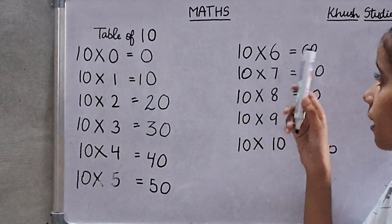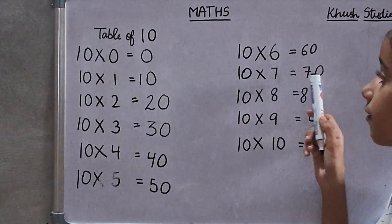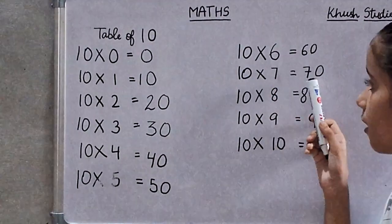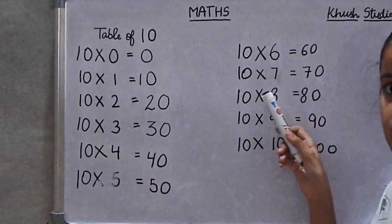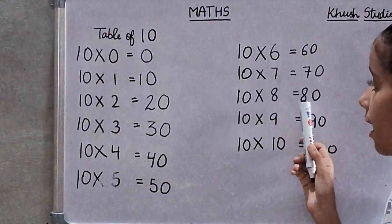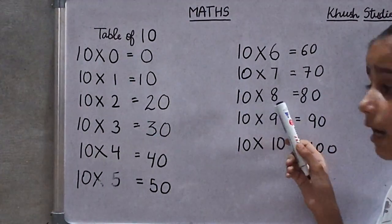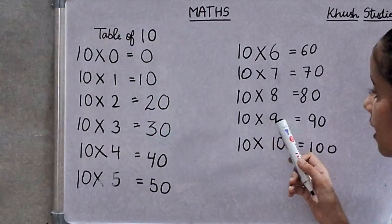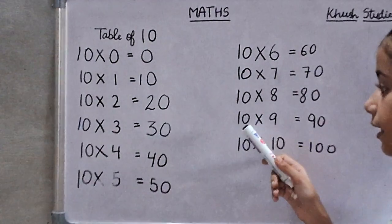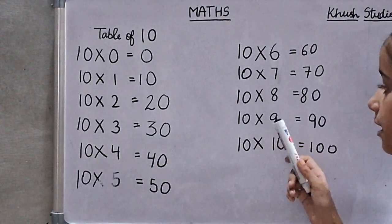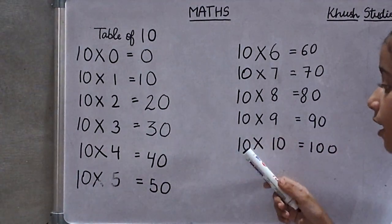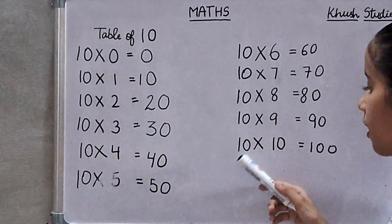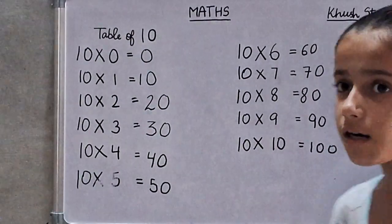Ten sixes are sixty. Ten sevens are seventy. Ten eights are eighty. Ten nines are ninety. Ten tens are one hundred.